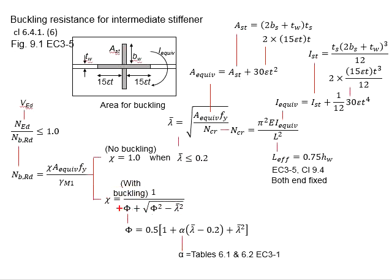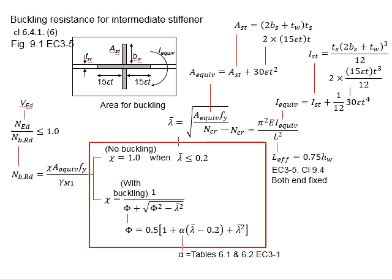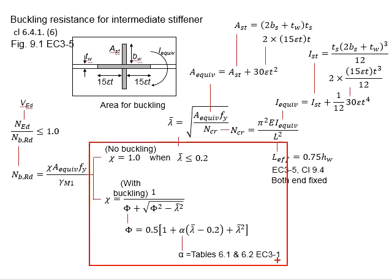To determine the chi, you need phi. Phi you can obtain from these equations and you also require the imperfection factor alpha, you can obtain from the tables 6.1 and 6.2. All this has been discussed in the previous video.